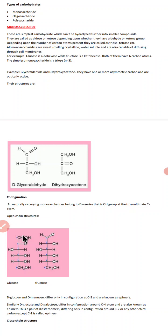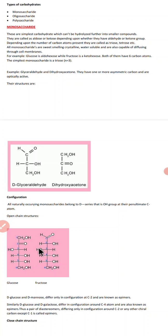The open chain structure of glucose has six carbons: carbon one has an aldehyde group (CHO), carbons two through five each have CHOH groups, and carbon six has CH₂OH. In fructose the open chain also has six carbons but carbon two carries a ketonic group instead of the aldehyde, which is absent at carbon one.